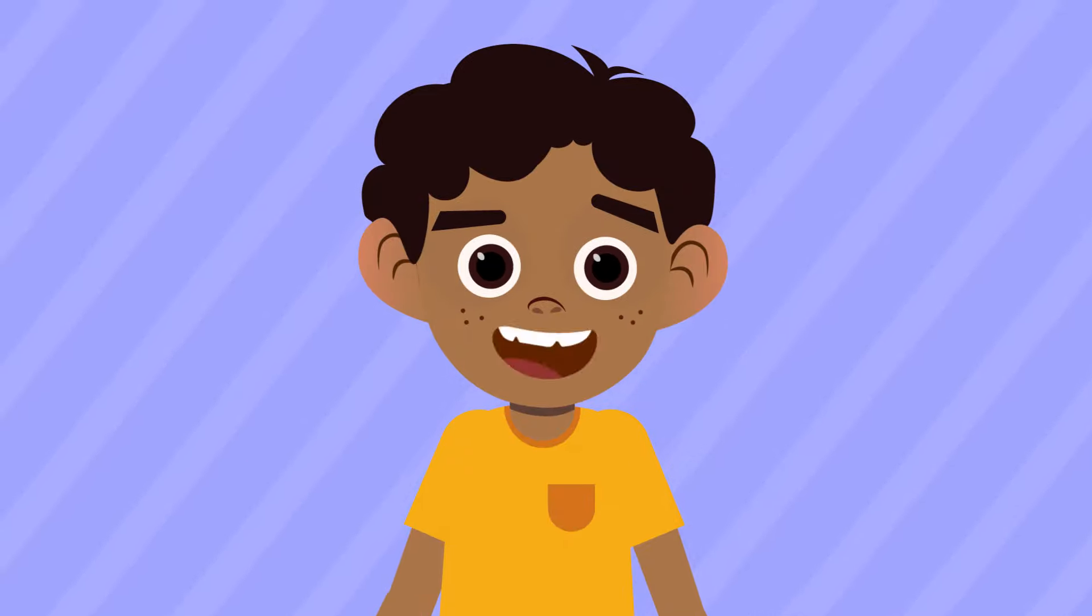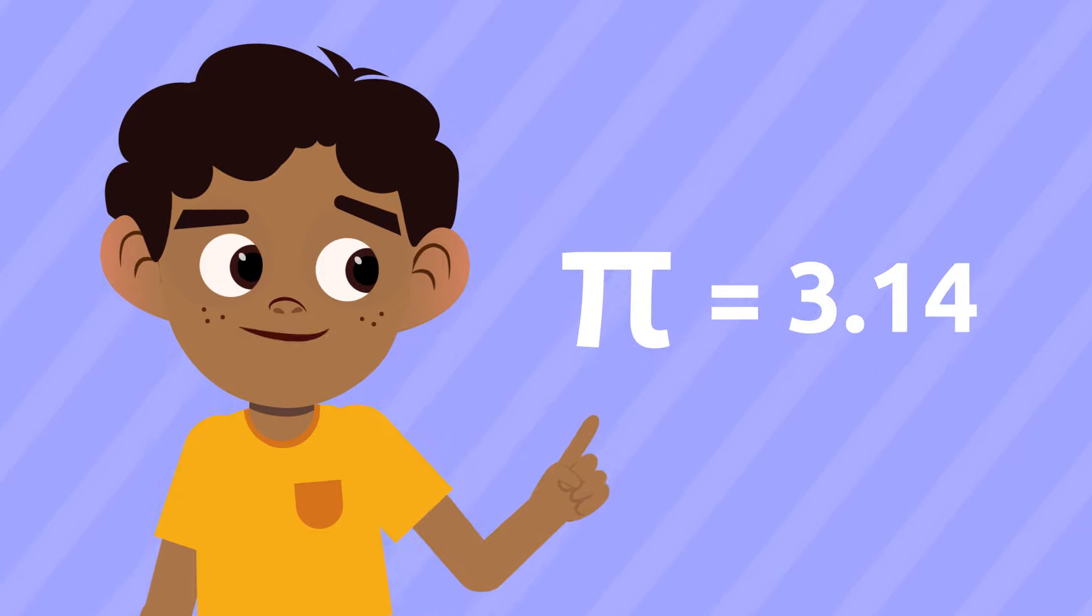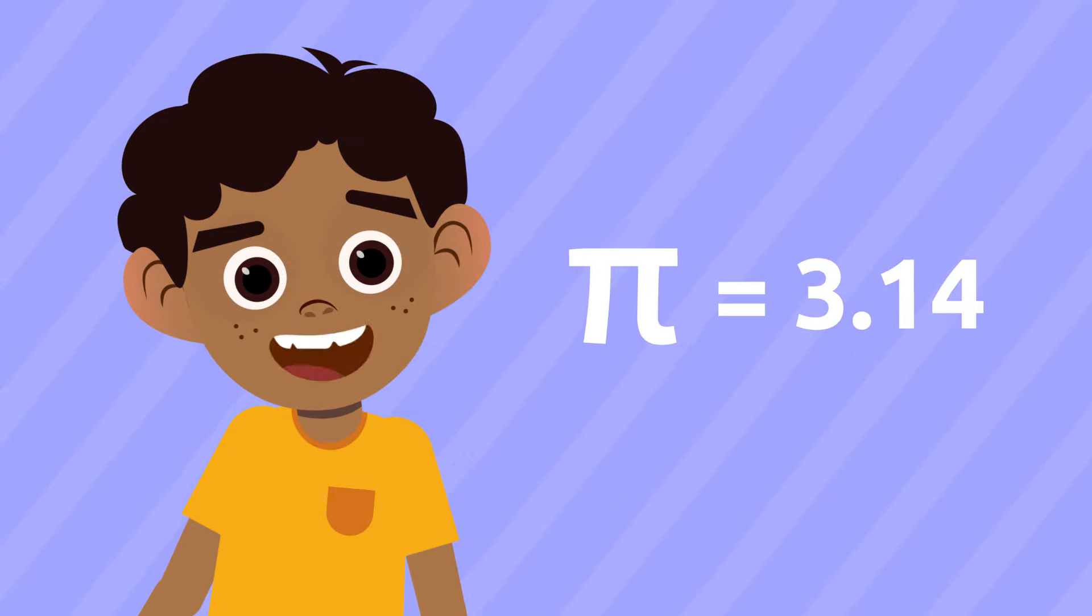For every circumference in the world, pi is always the same number, that is to say, it equals 3.14. If you want to learn more about it, watch our video about the number pi.